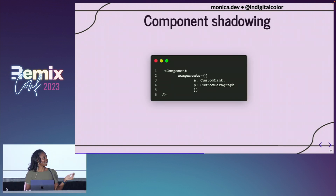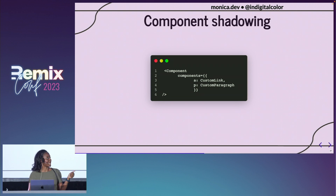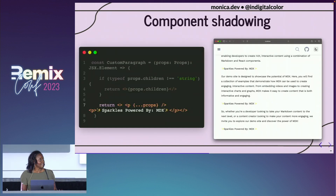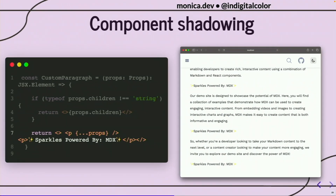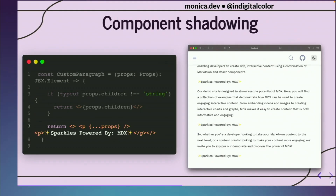This is a large object showing all the different HTML elements you can replace with MDX — meaning every time you write Markdown using that element, it would automatically be replaced. For example, if we only wanted to replace anchor tags and paragraphs, we pass in a components prop with those two values. This is an example of what a custom paragraph could look like — it takes the paragraph written in Markdown and appends another paragraph saying 'Sparkle is powered by MDX.'